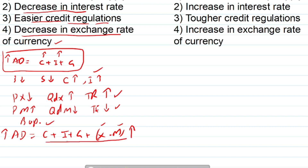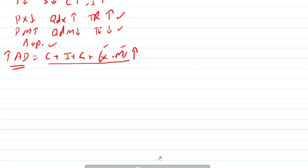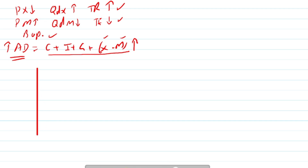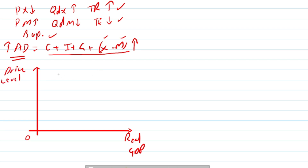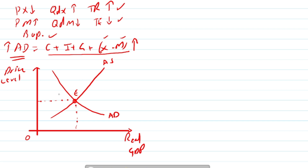Now let's look at the diagram of expansionary monetary policy. When there is expansionary monetary policy it increases aggregate demand in the country. We have real GDP on the x-axis and price level (average price level) on the y-axis. Writing just 'price' would refer to the price of a certain product, but here in macroeconomics we consider the average prices of everything traded in the country.